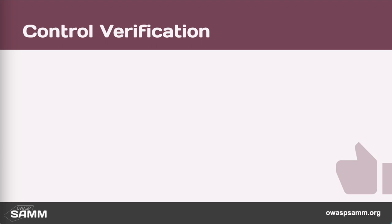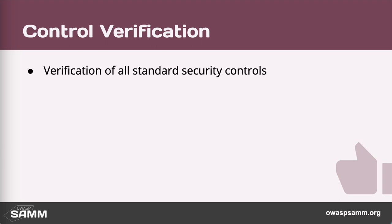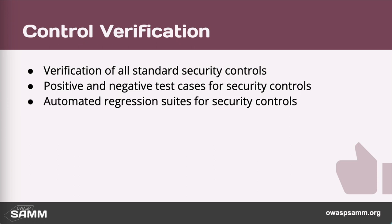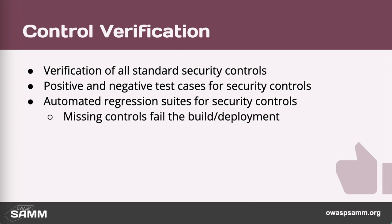Good for this stream means that we've got test cases for security features, and we have, at the starting point, automated as many of our feature test cases as possible. We've got those security controls being tested with both positive as well as negative test cases. We've automated our security checks in our regression suites, and any failing test should fail the build and deploy pipeline.